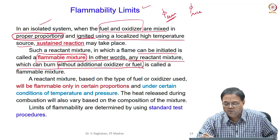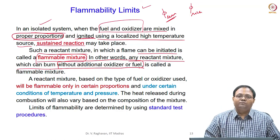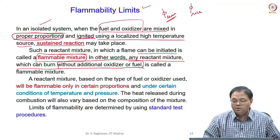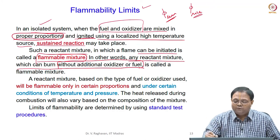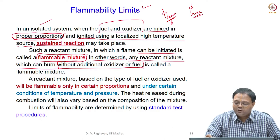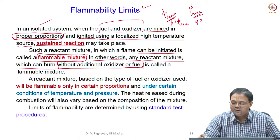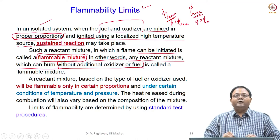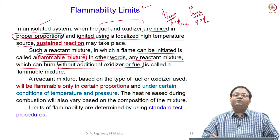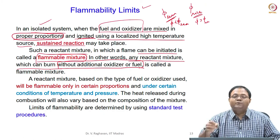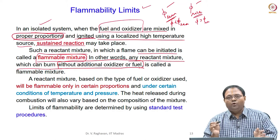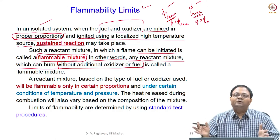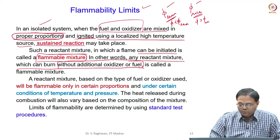For example, say phi lean is 0.6 for a particular fuel-mixture combination, and phi rich may be 2.1. Only under this range will it burn. If phi is reduced below phi lean or increased above phi rich, ignition will not take place and we cannot have a flame propagating through such a mixture. These are called flammability limits — the equivalence ratios on the lean and rich sides that form the boundaries of the flammable mixture.